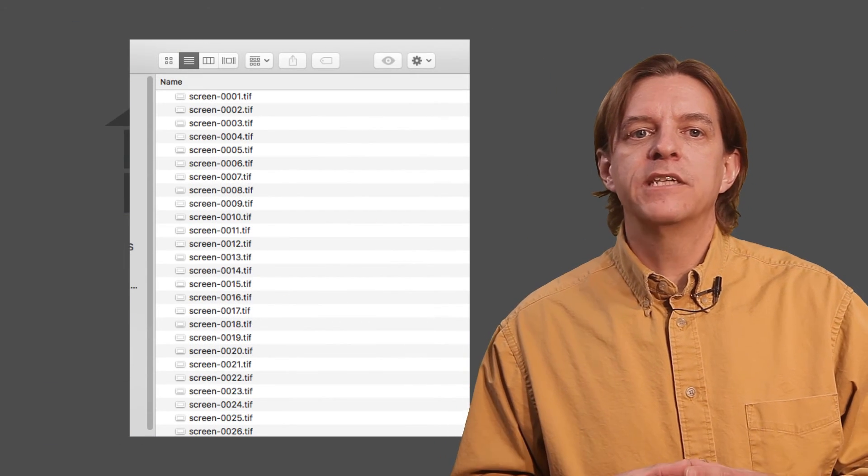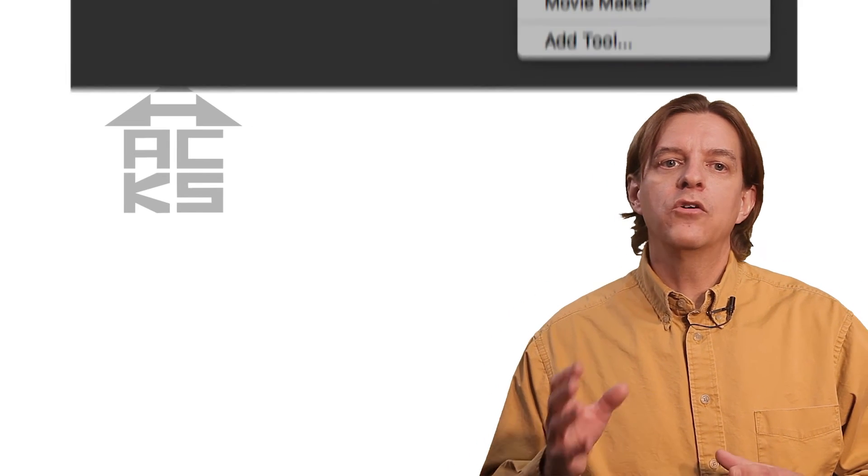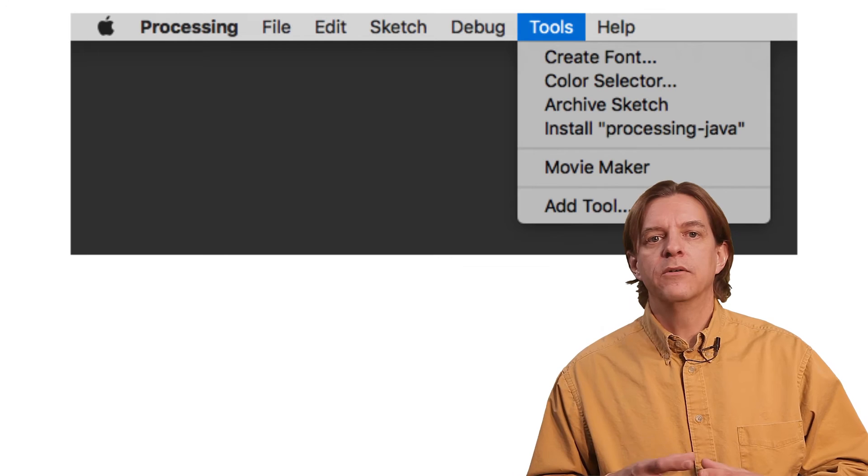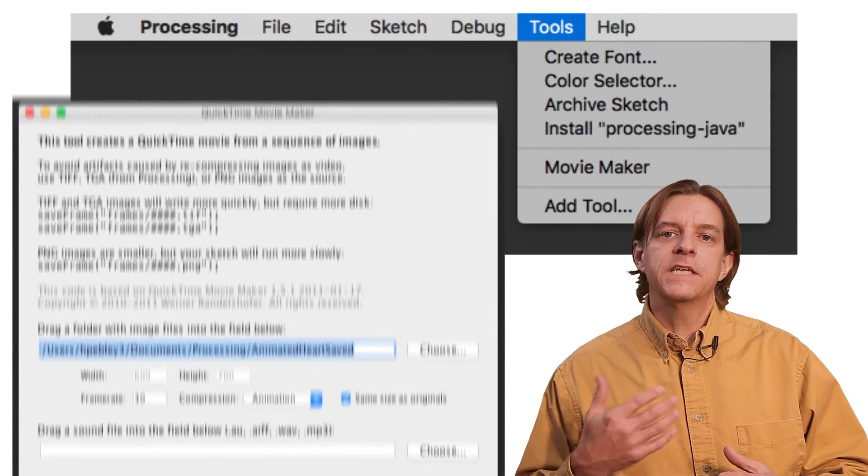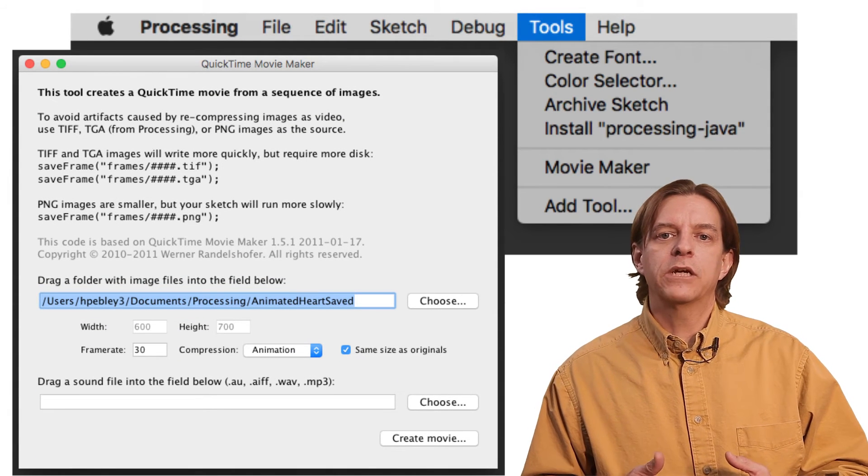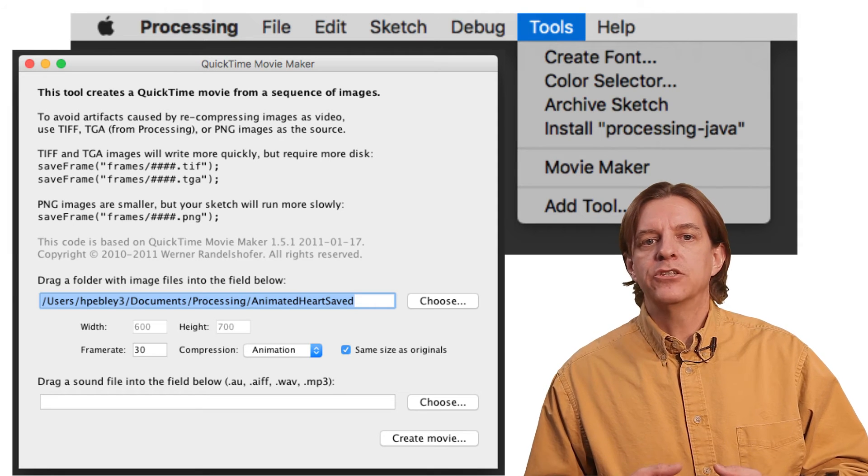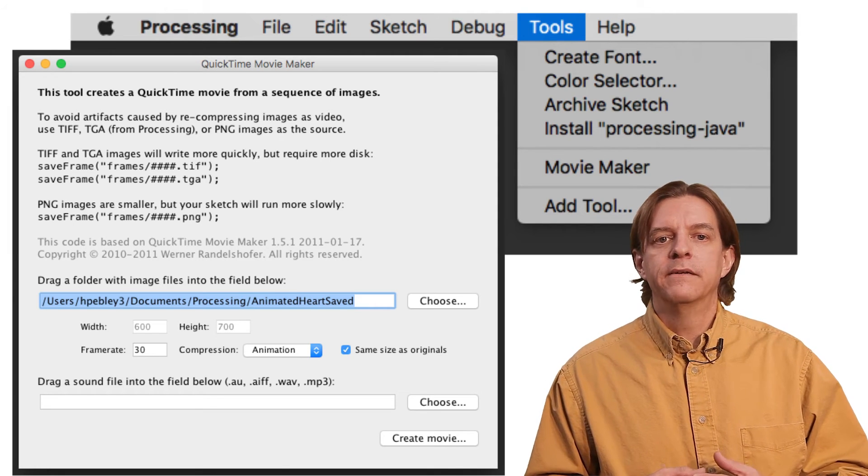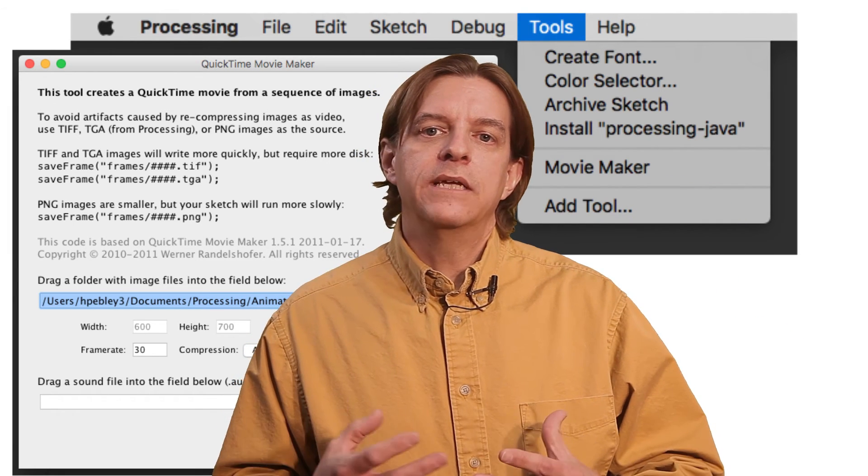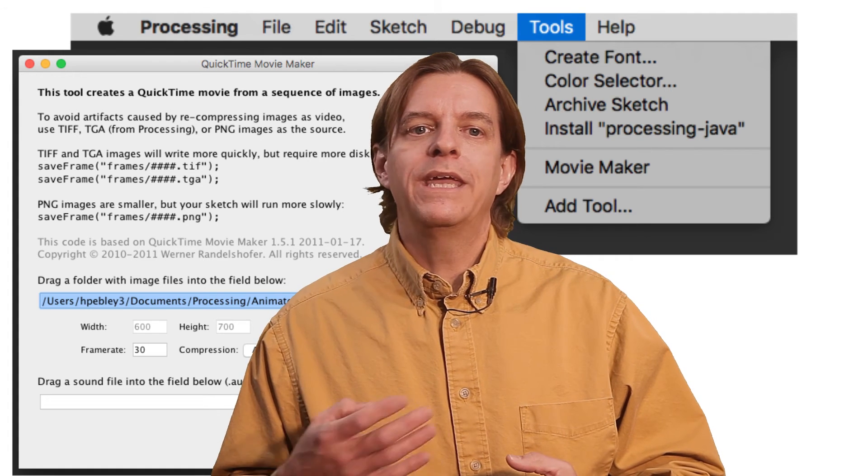We can see a bunch of individual snapshots of each frame of our animation. In one last step, we can go to Processing's Tools menu and select Movie Maker. It gives us a dialog where we can select the directory containing the shots of our animations and press the Create Movie button. This compiles our individual images into an MOV file that we can email to our intended.